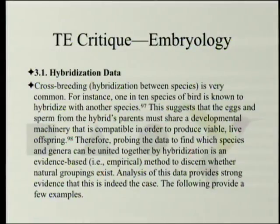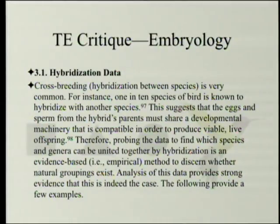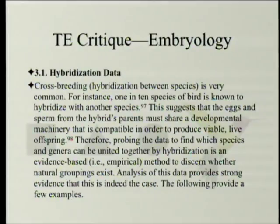Hybridization data: crossbreeding or hybridization between species is very common — one in ten species of bird is known to hybridize with another species. This suggests the eggs and sperm from hybrid parents must share compatible developmental machinery to produce viable offspring. Probing which species can be united by hybridization is an evidence-based method to discern whether natural groupings exist, and analysis of this data provides strong evidence that this is indeed the case.